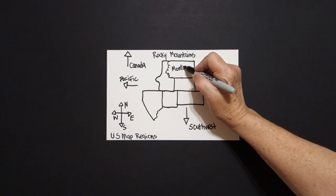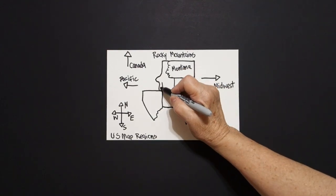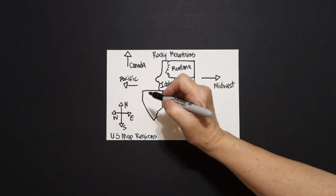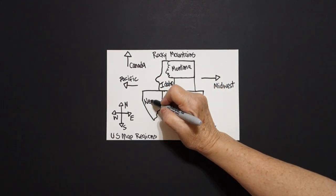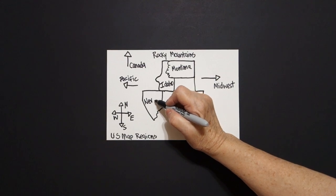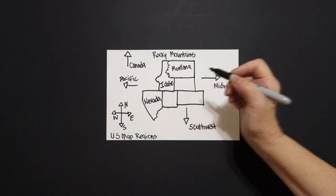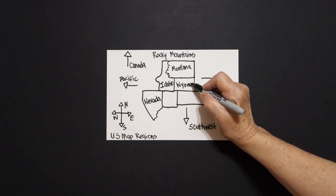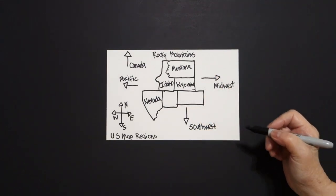So up top, Montana, over here, Idaho, down here, Nevada, right here, Wyoming.